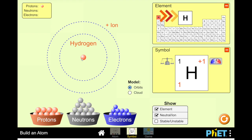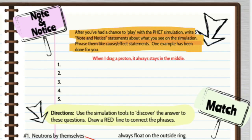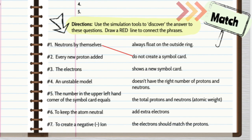These are the things that I'd like you to observe. You can write a list of your observations, or if you're using the notebook, you can phrase it using this phrase: "When I drag a proton, something happens."